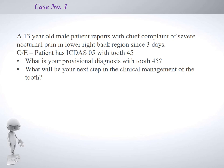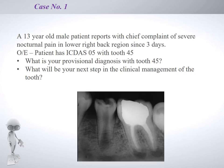Let's begin with a case-based discussion. A 30-year-old boy reports with a chief complaint of severe nocturnal pain — pain especially during sleep — in the lower right back region of the mouth for three days. On examination, tooth number 45, the mandibular right second premolar, has an ICDAS score of 05, meaning extensive caries. Here is a radiograph for your provisional diagnosis.